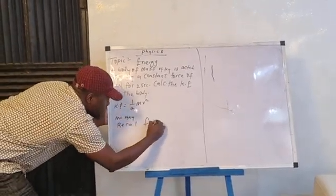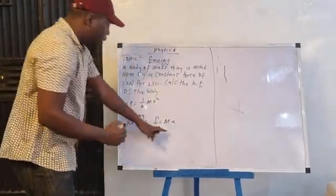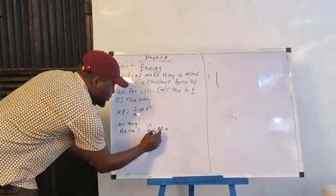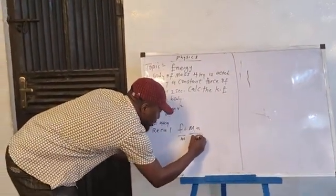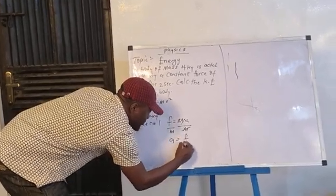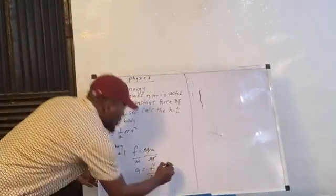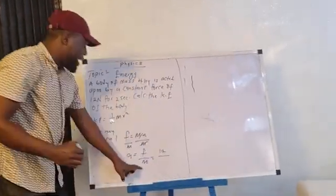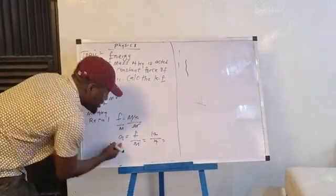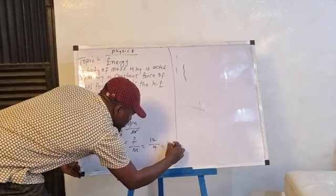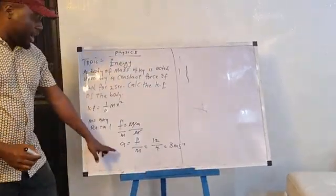we recall that F is equal to MA. F is equal to mass times acceleration. And of course, to get acceleration here, we are going to make A the subject of formula, which is we divide both sides by M. When we do that, we have A is equal to F over M. Okay, now when we are given the force as 12, and the mass as 4KG, 4KG as we divide, that means our acceleration now will be 3 meter per second square. This is the value of our acceleration. Now, we have gotten our acceleration.